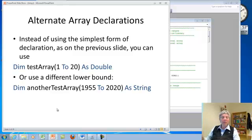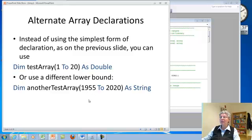Now there's some alternate arrays. For example, you can explicitly put the lower limit in, so 1 to 20, or you don't have to start at 1. Here's one where I wanted to index by years, so I started with 1955 and I went to 2020. So you can have a different lower bound than 1 if you want to.